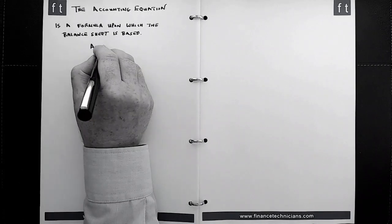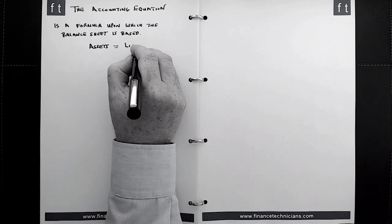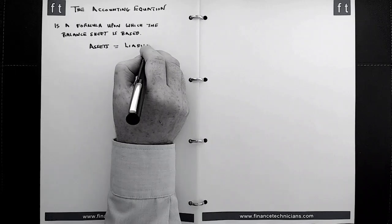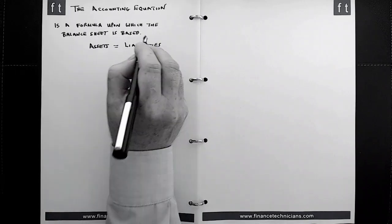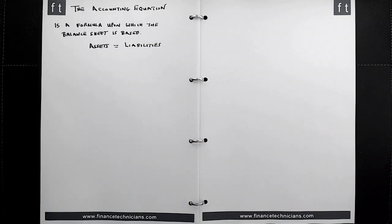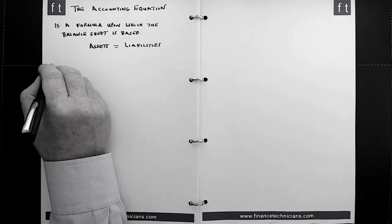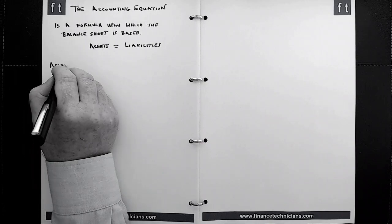So the accounting equation is a formula upon which the balance sheet is based, and it states the following very simply: assets must equal liabilities. Therefore, it will be hugely helpful to have a clear understanding of definitions concerning assets and liabilities.